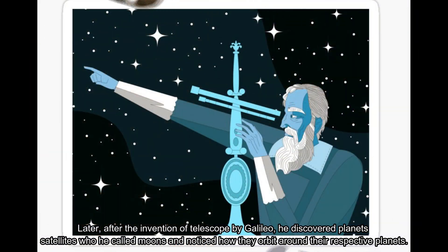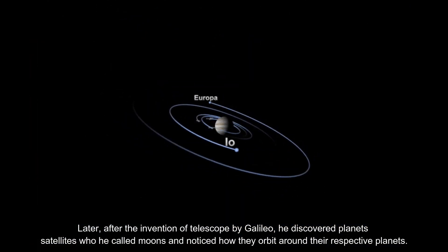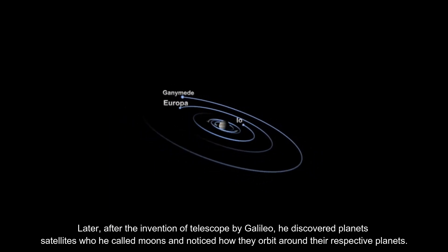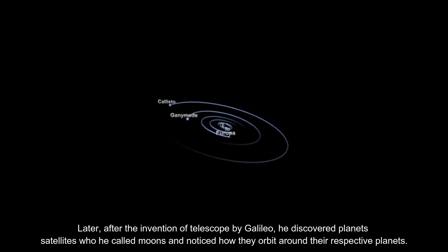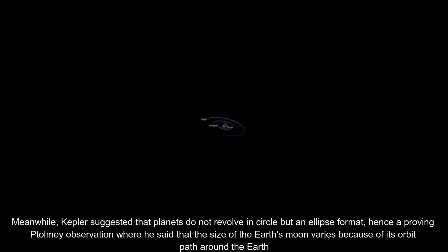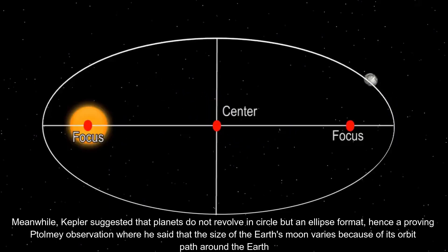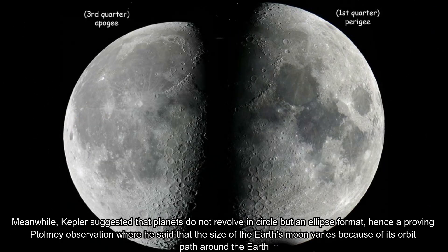After the invention of the telescope by Galileo, he discovered planets' satellites, which he called moons, and noticed how they orbit around their respective planets. Meanwhile, Kepler suggested that planets do not revolve in circles but in an ellipse format, hence disproving Ptolemy's observation where he said the size of the Earth's moon varies because of its orbit path around the Earth.